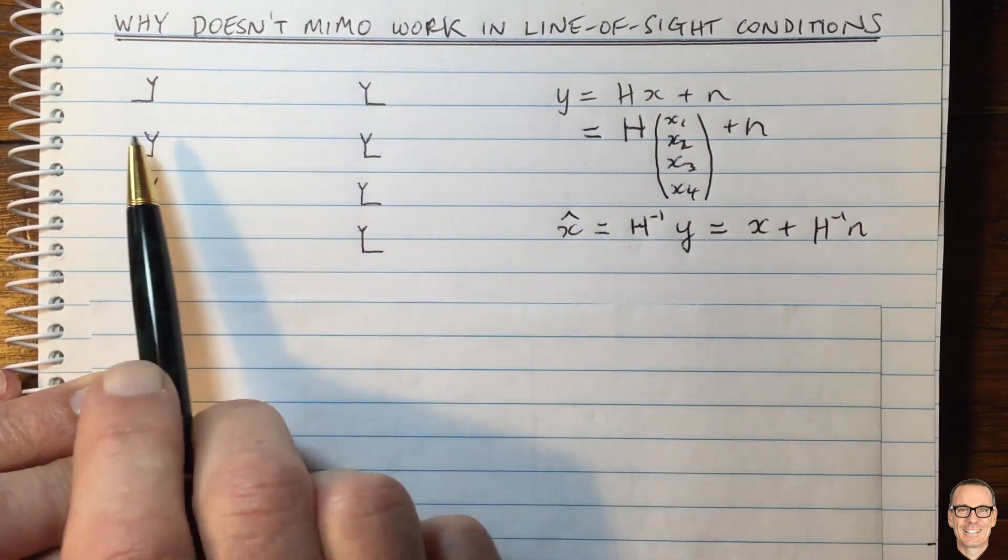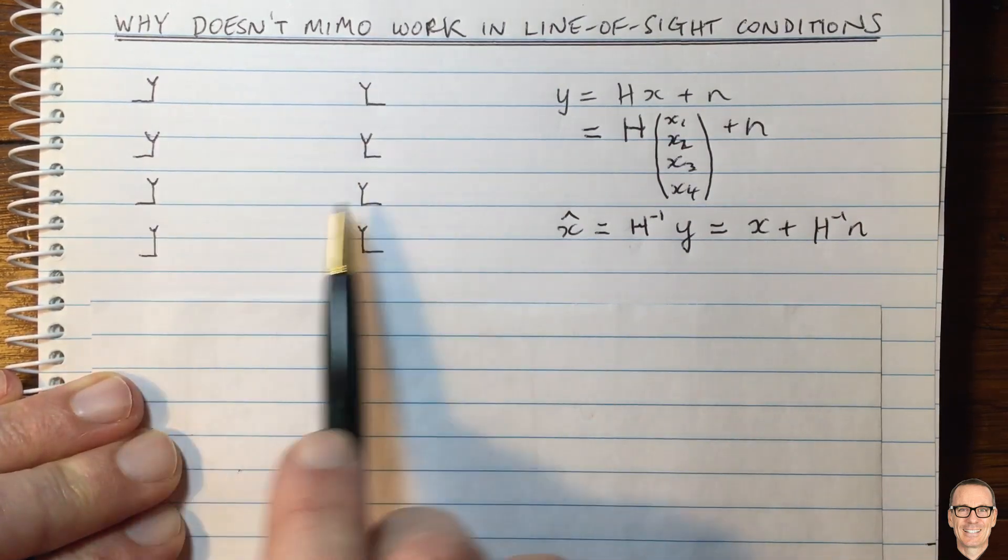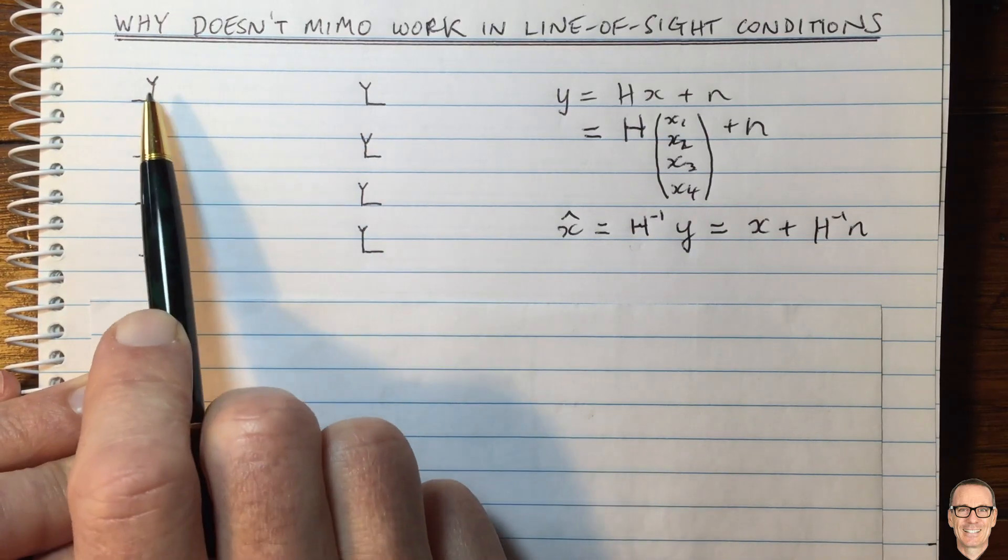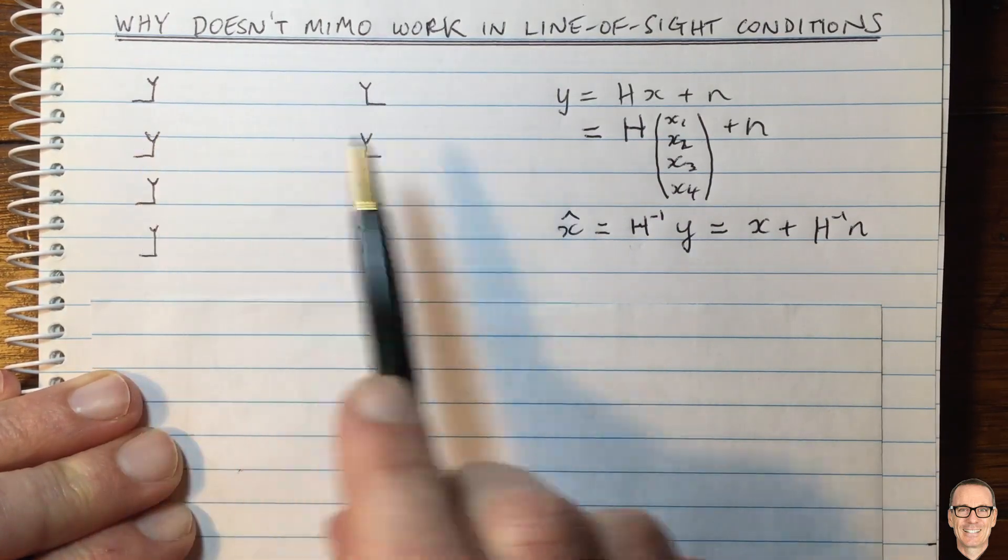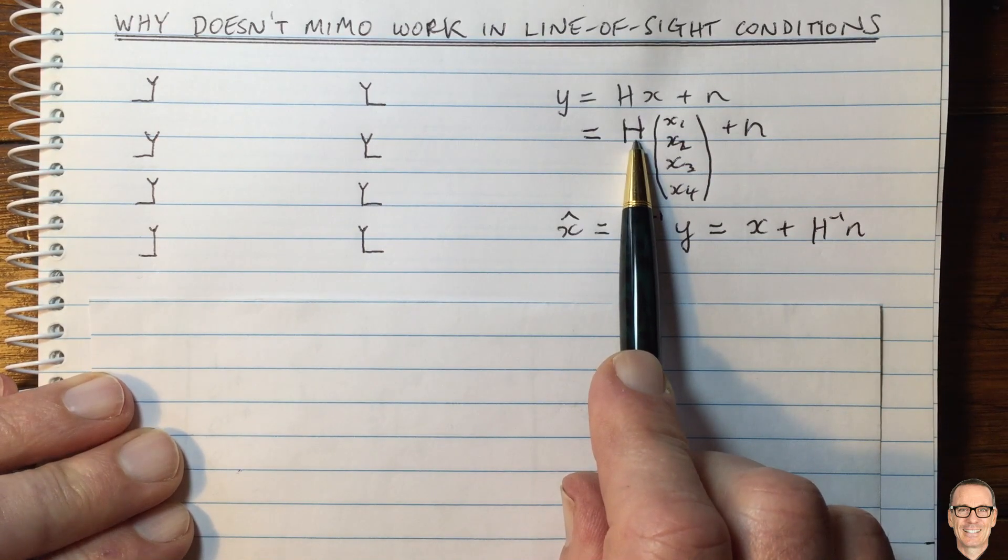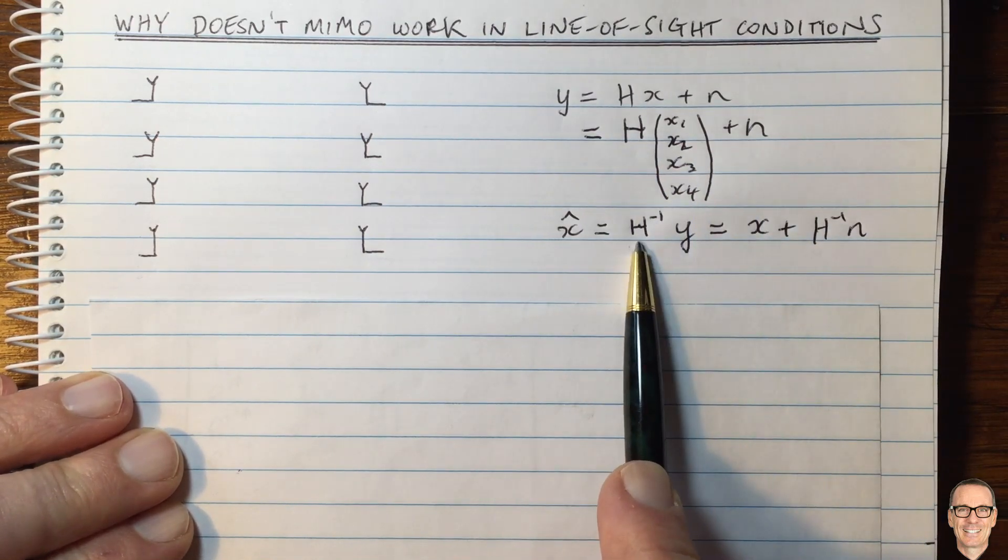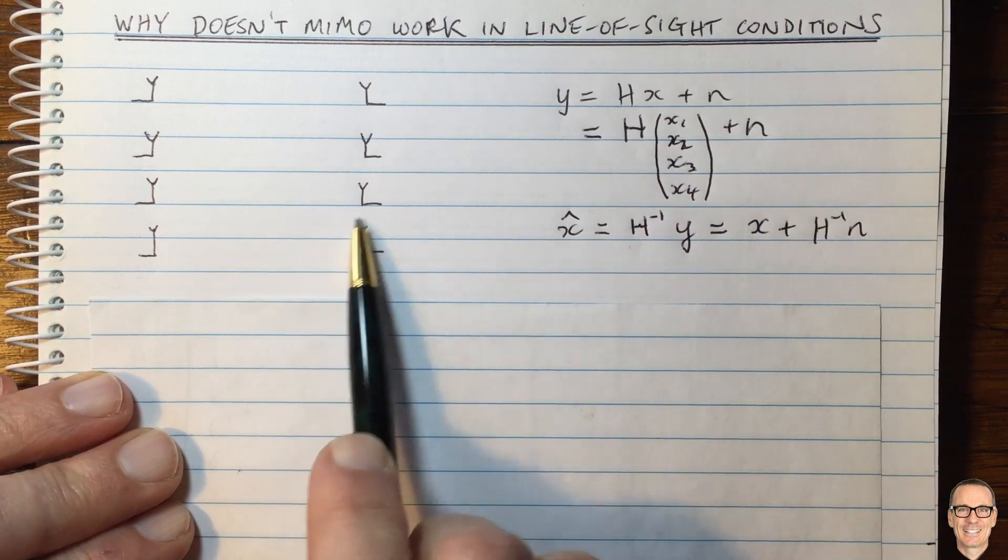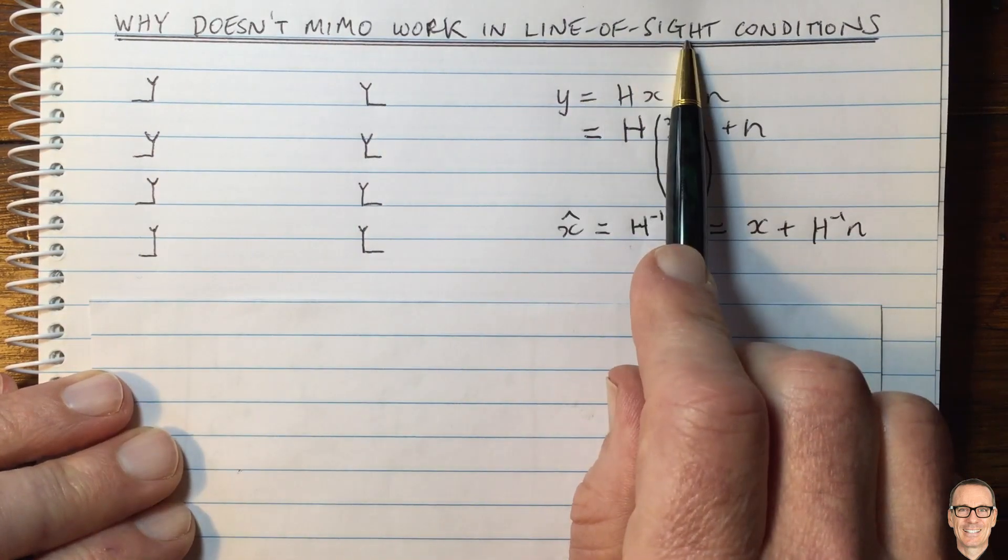Well, let's think naively. If all of the channel gains were equal, and all the elements of the matrix H would be the same, in that case, you can't invert the matrix. Is that what we're dealing with in line of sight?